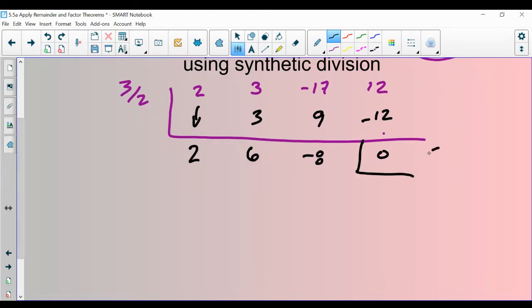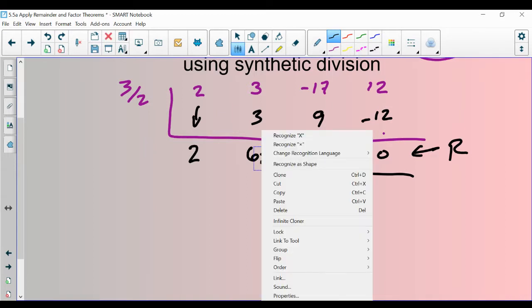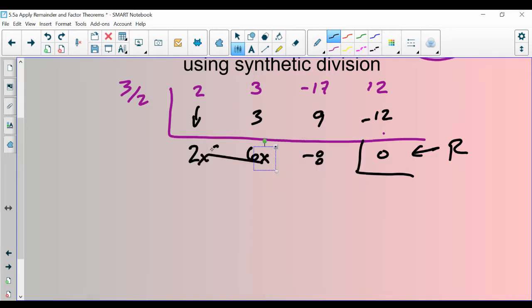This means that 0 is our remainder. This one gets no x's, this one gets 1x, and this one gets an x squared. So because it doesn't have a remainder, I'm not going to put plus 0 over whatever it is. So your answer here is just going to be 2x squared plus 6x minus 8.